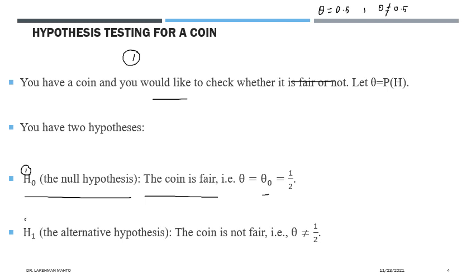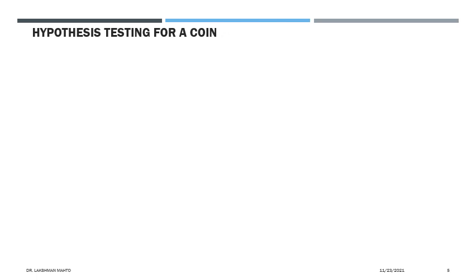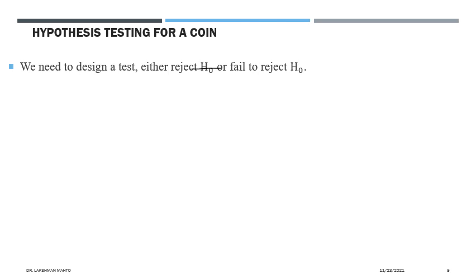Now with the help of a few observations we try to establish whether we are going to reject H0. If we reject H0, it simply says the coin is not fair and the probability would not be 0.5. If we fail to reject H0, we conclude that the coin is fair and the probability of success would be 0.5. To infer between these two situations we need some evidence as observations, so we need to design a test.